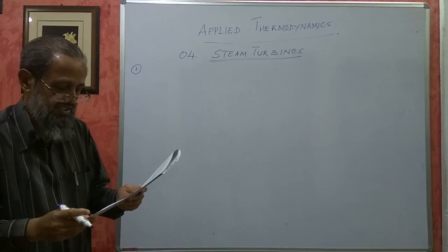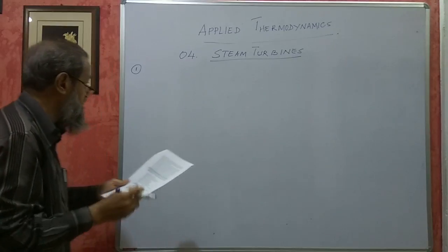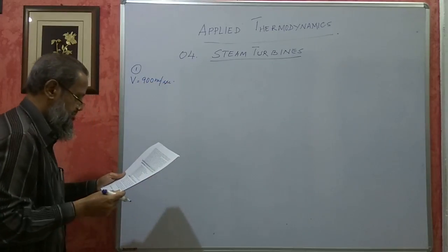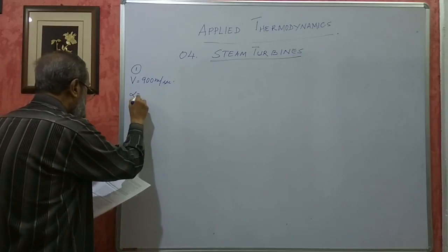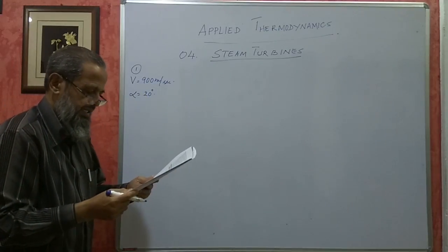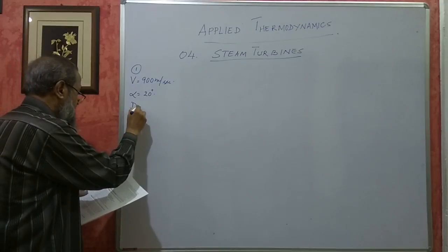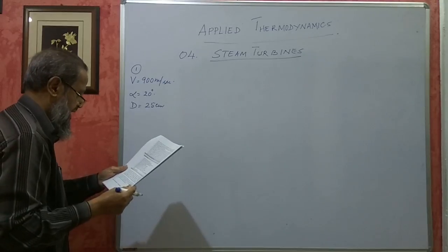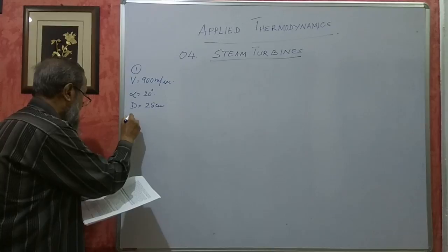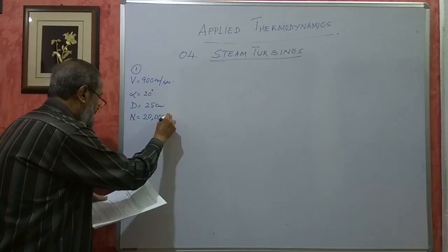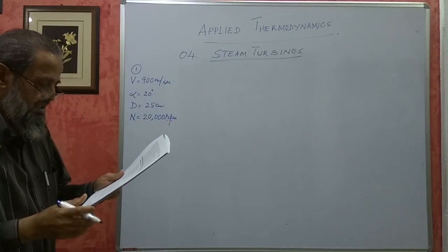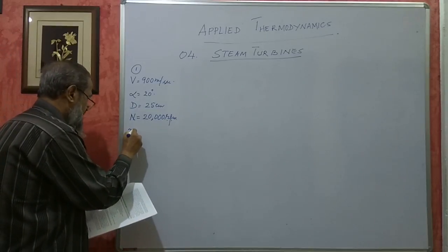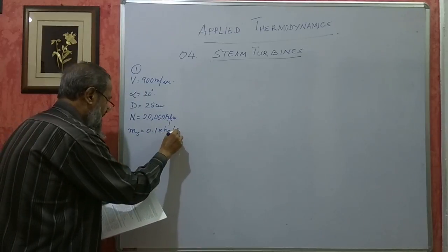Steam issues from the nozzle of a simple impulse turbine with a velocity of 900 meters per second, so capital V is 900 m/s. The nozzle angle alpha is 20 degrees. The mean diameter of the blades is 25 centimeters, and it rotates at 20,000 RPM. The mass flow through the turbine nozzles and blading is 0.18 kg of steam per second, that is ṁs = 0.18 kg/s.